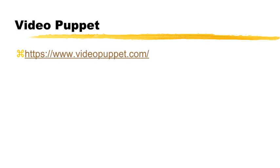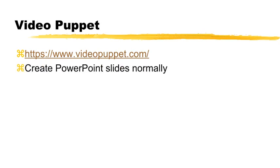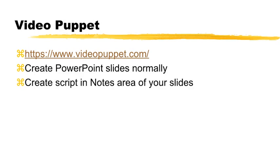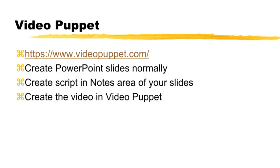The solution is a website called Video Puppet. With Video Puppet, you create your PowerPoint slides normally. You also write a script, but instead of using Microsoft Word, you write the script in the notes area of your slides. That's it — you are done. You load this PowerPoint deck into Video Puppet and it creates your video for you, completely automatically. As an additional advantage, rendering the video is much quicker than Camtasia because it happens on their server rather than your local computer. The slower your computer, the greater the difference.